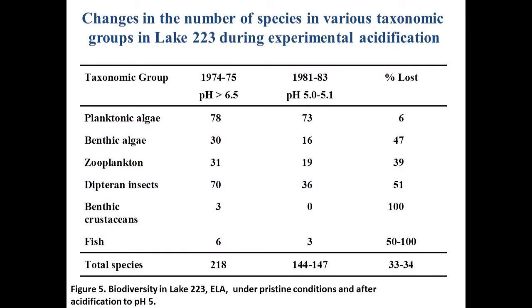Biodiversity, going from the original pH of slightly over 6 to 5.0–5.1, showed a net loss of about a third of the taxa we could study well in the lake. Even that doesn't reflect the number of species lost, which was around 50% — the net number is only 33% because some new acidophilic taxa came in to replace some lost species. But this was a real eye-opener to scientists, particularly in the US where they didn't want to hear it.